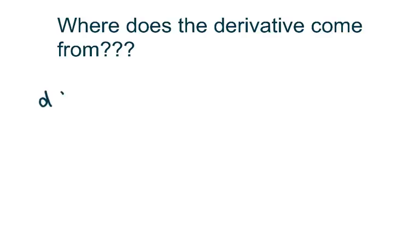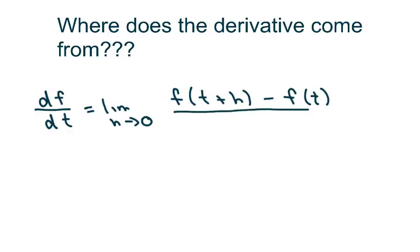The derivative of F with respect to X, and I'm just going to put instead of X I'm going to put respect to time, is the limit as H approaches, tends to zero, or approaches zero, is F of T plus H minus F of T over H.